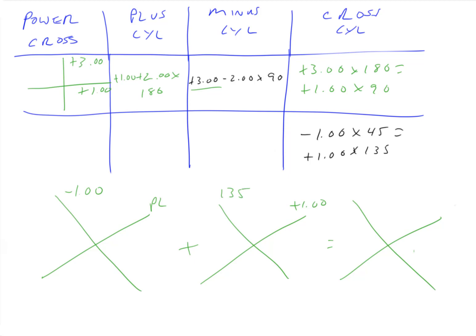Okay, so the minus 1.00 axis 45, remember where the axis is, where the plano is. And I should have written a plano there. And then plus 1.00 axis 135.